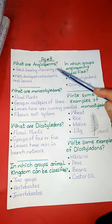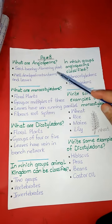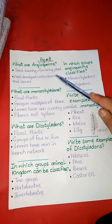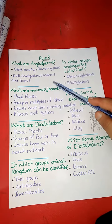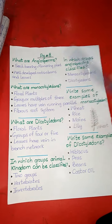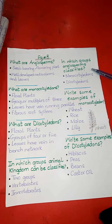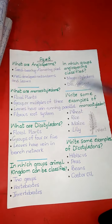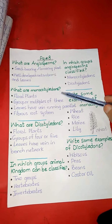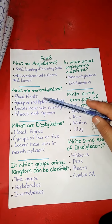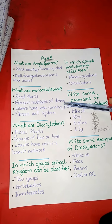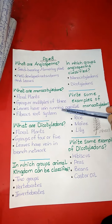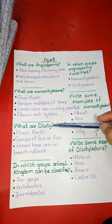Now students, repeat the previous questions. What are angiosperms? Angiosperms are seed-bearing, flowering plants with well-developed roots, stems and leaves. In which groups are angiosperms classified? Two main groups: monocotyledons and dicotyledons. What are monocotyledons? They are floral plants arranged in groups or multiples of three. Their leaves have veins running parallel, and they have a fibrous root system.